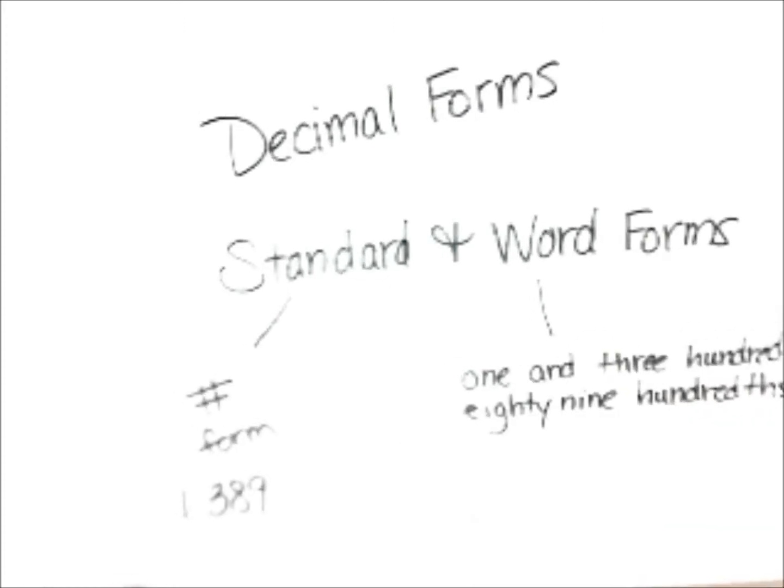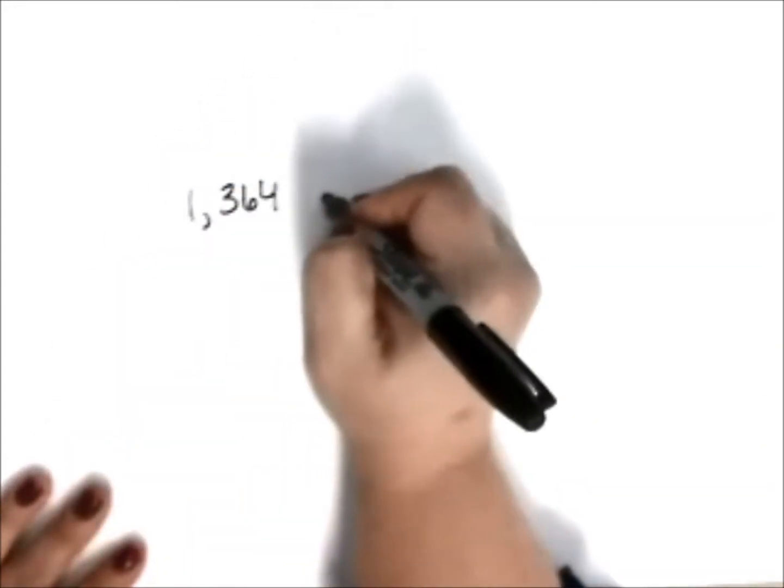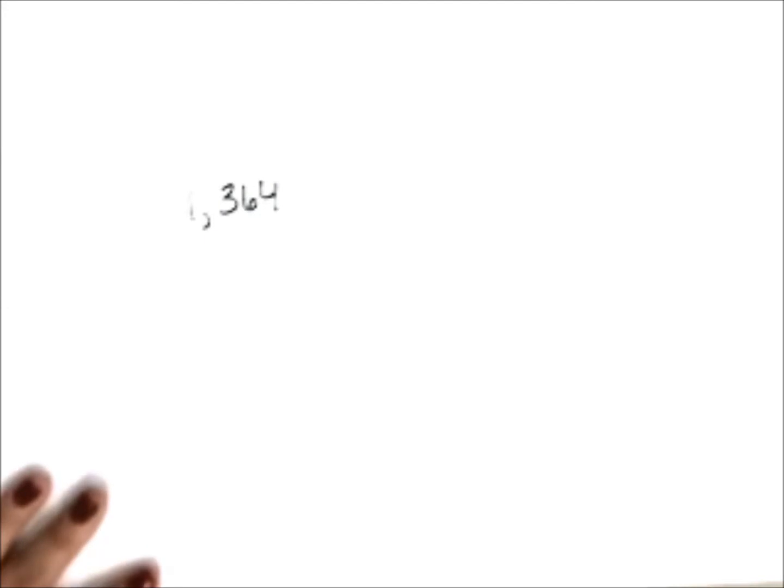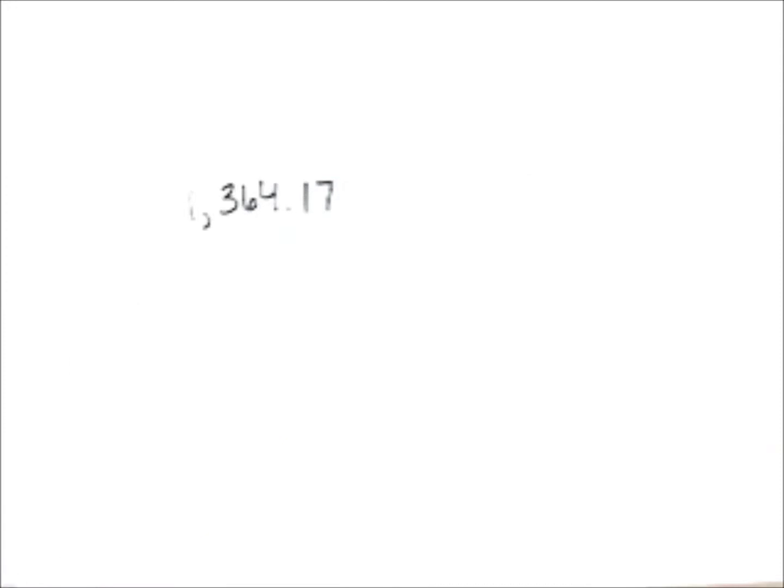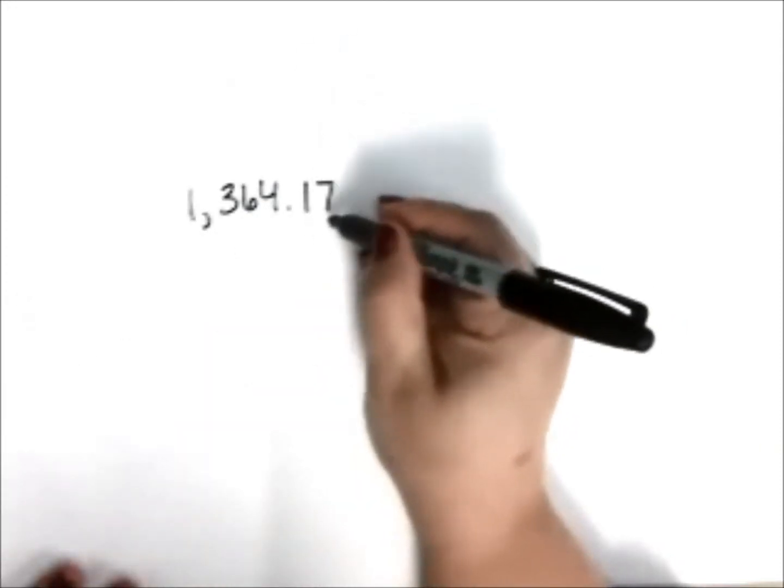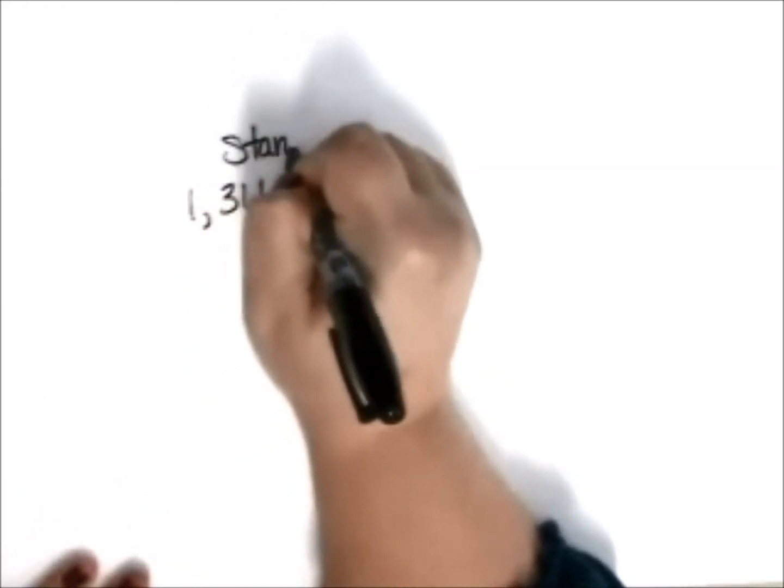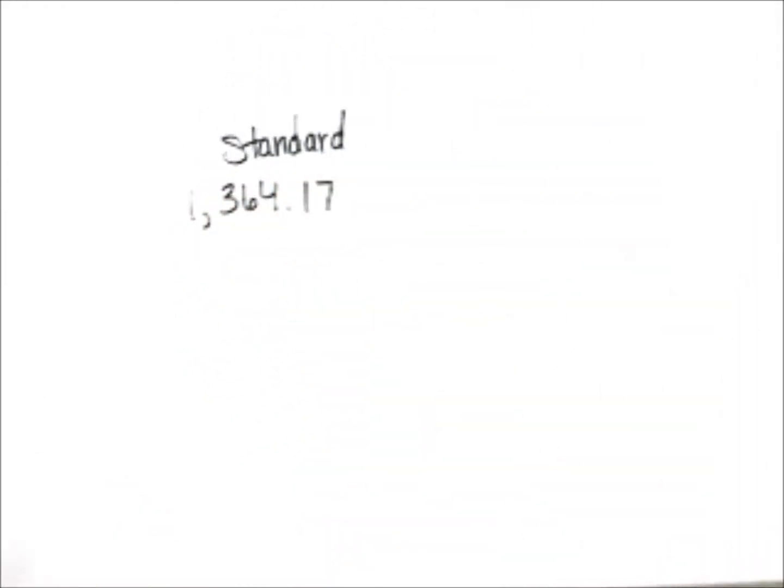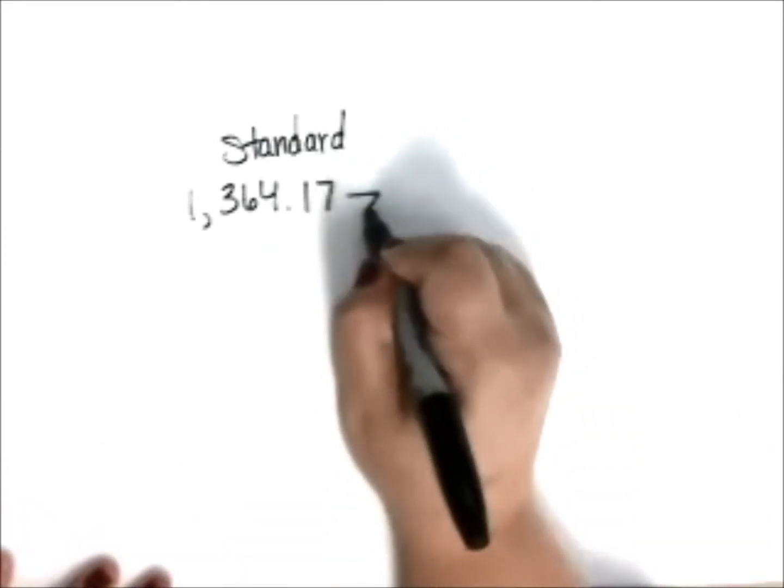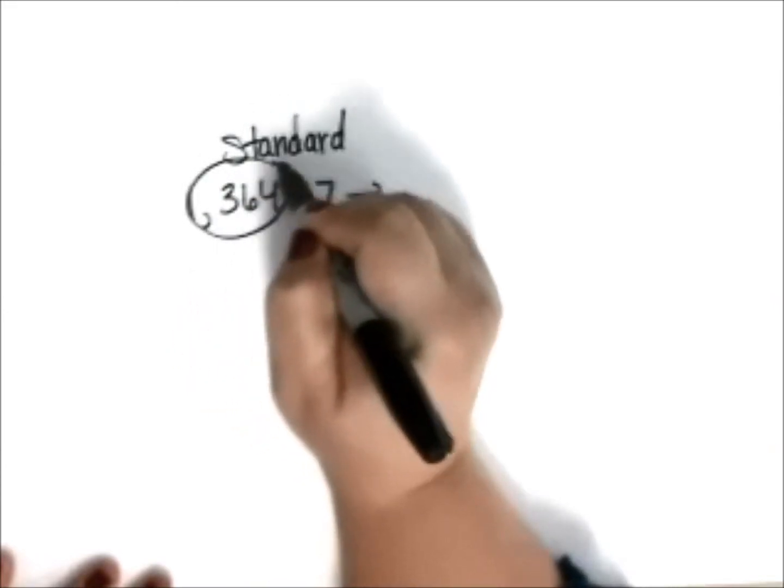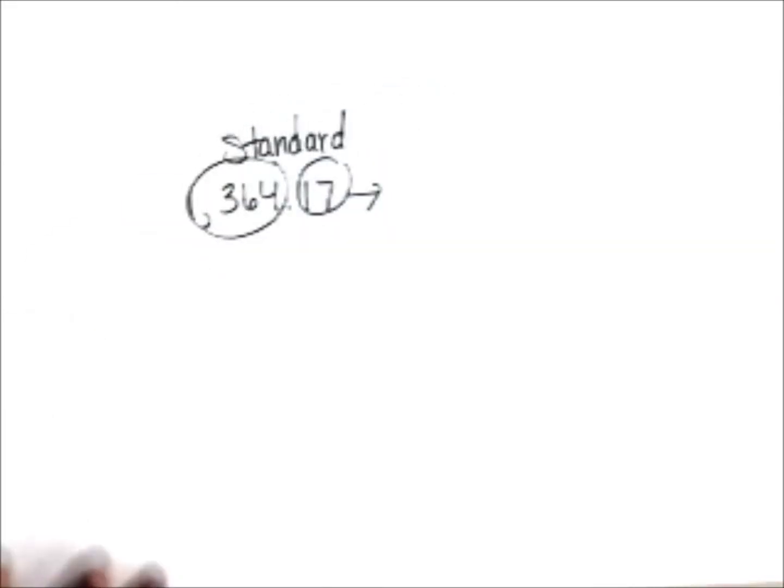So let's just practice a few more of these. I have a decimal. It has a whole number, a decimal point, and a little bit. We have a part of a whole right behind that decimal point. So this is called standard form, again, because this is what we're accustomed to seeing. Word form is translating this into words. So you want to be able to say these decimals in order to write them in words.